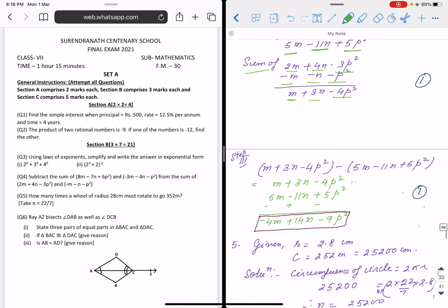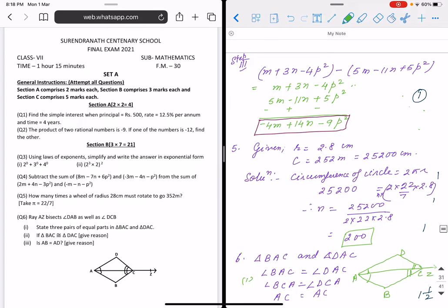Second sum is 2m plus 4n minus 3b square minus m minus n minus b square. 2m minus m will be m, 4n minus n will be 3n, and minus 4b square. Next we have to subtract sum of this from the sum of that. We know that if I say subtract 2 from 3, we write 3 first and then 2. So it is m plus 3n minus 4b square, then 5m minus 11n plus 5b square. 1 minus 5 is minus 4, plus 3 and plus 11 will be plus 14n. Minus 4 and minus 5 will be minus 9b square. This will be answer, write in rectangular box.